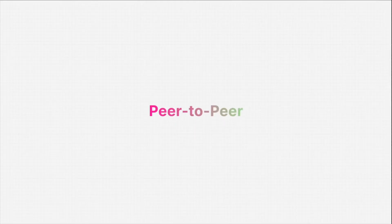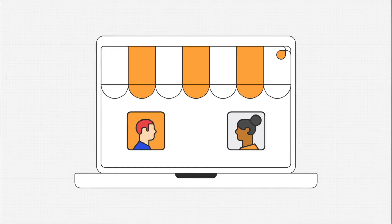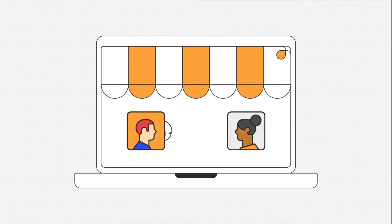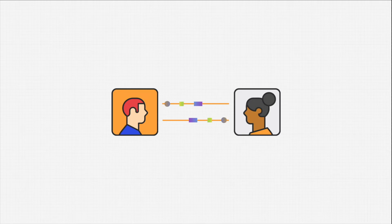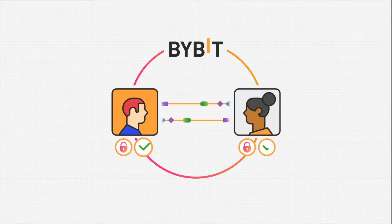P2P stands for peer-to-peer. P2P trading is simply peer-to-peer transactions between individuals. Bybit acts as the currency marketplace, similar to how eBay and Amazon act as a marketplace for individuals selling products. It allows people to exchange their crypto for their desired fiat currency, and vice versa, without the fees of a for-profit intermediary. When you're buying or selling crypto via P2P trading, Bybit acts as a neutral third party.